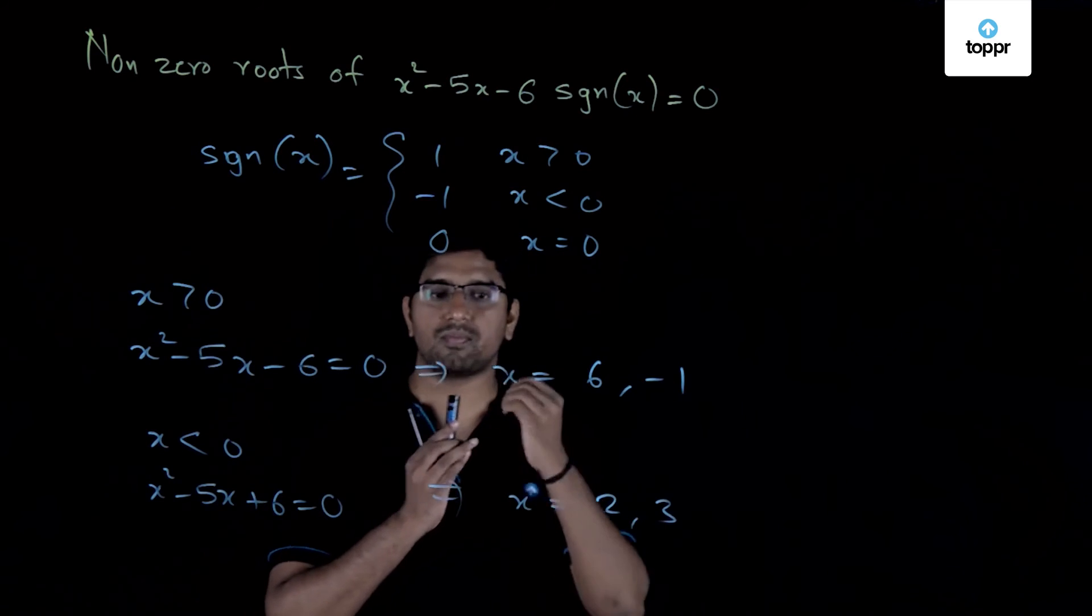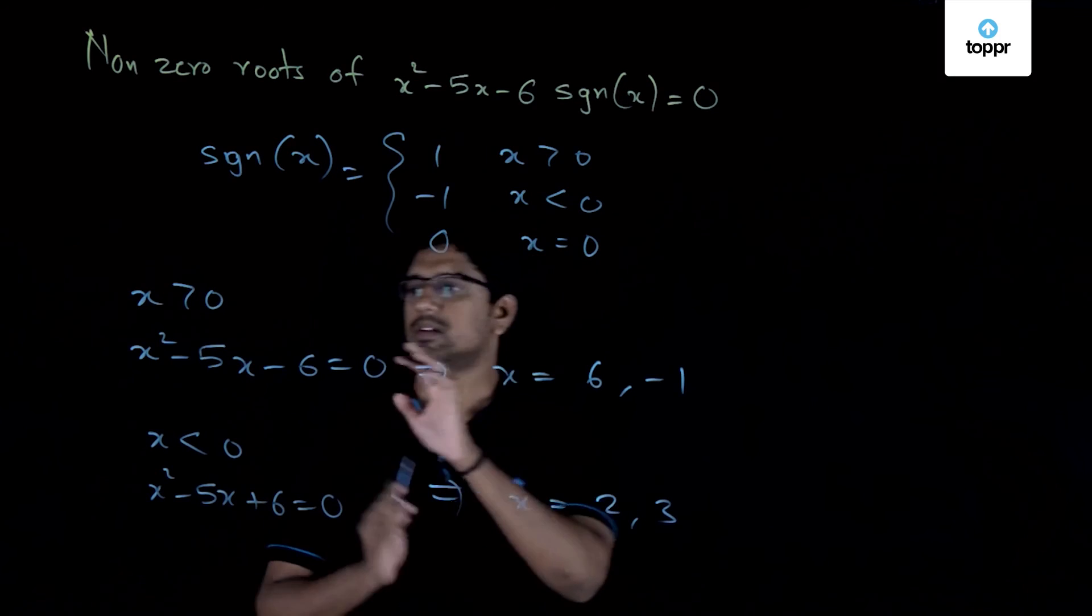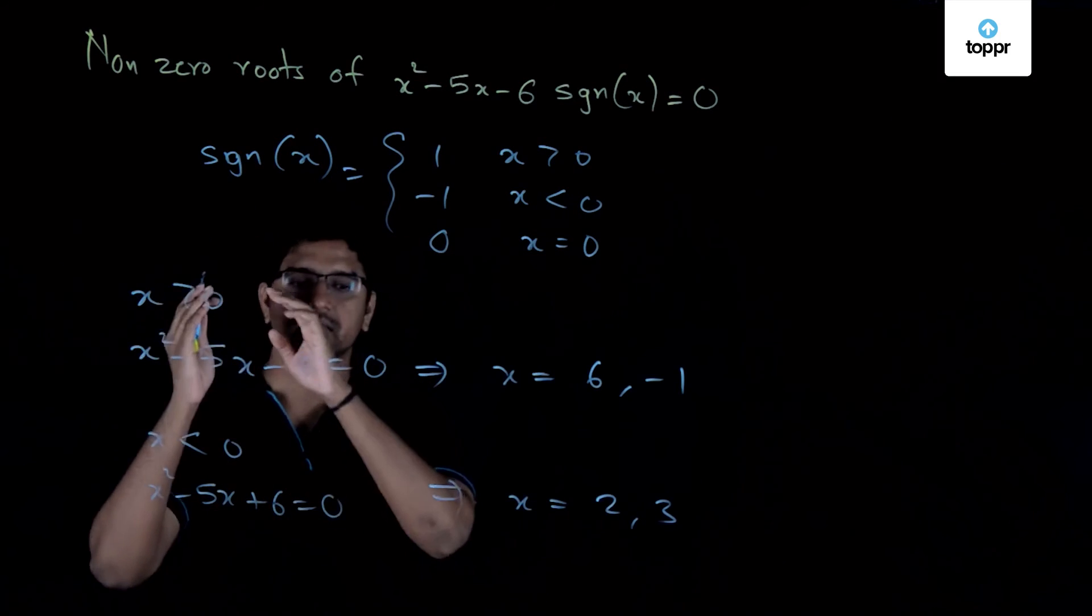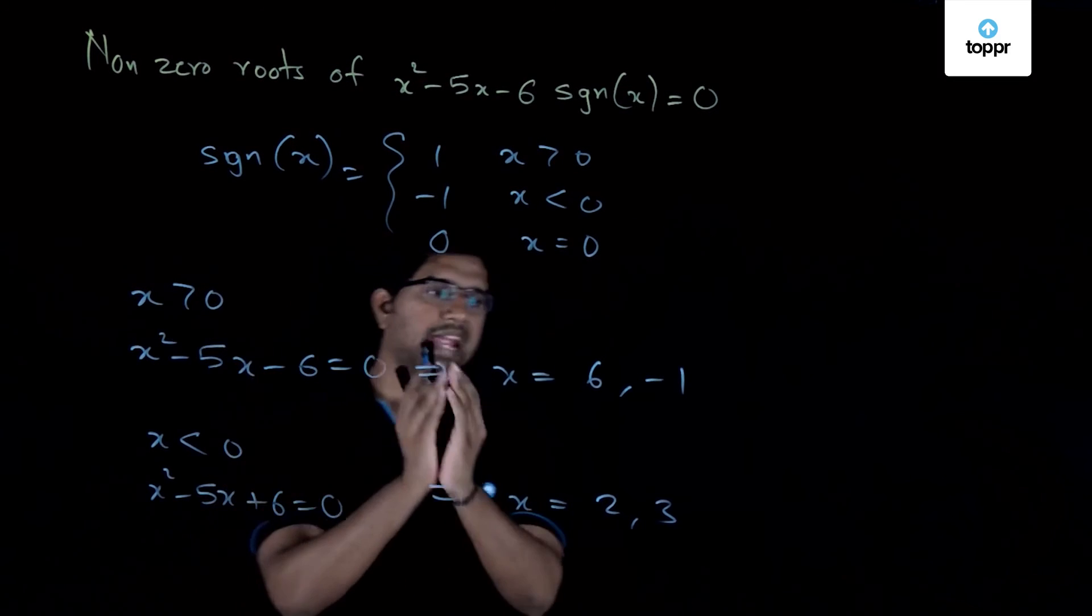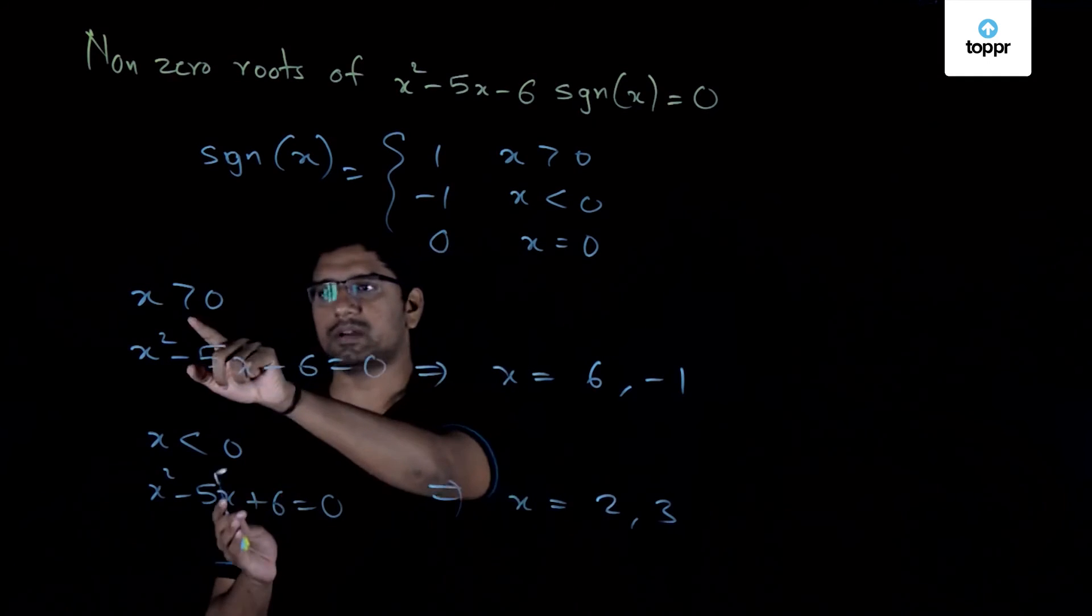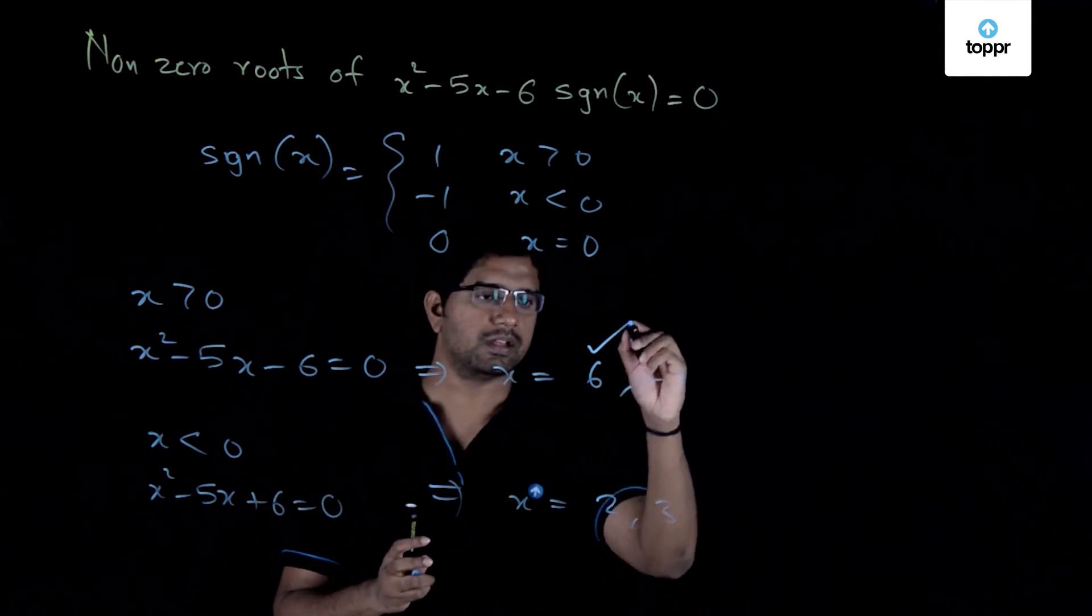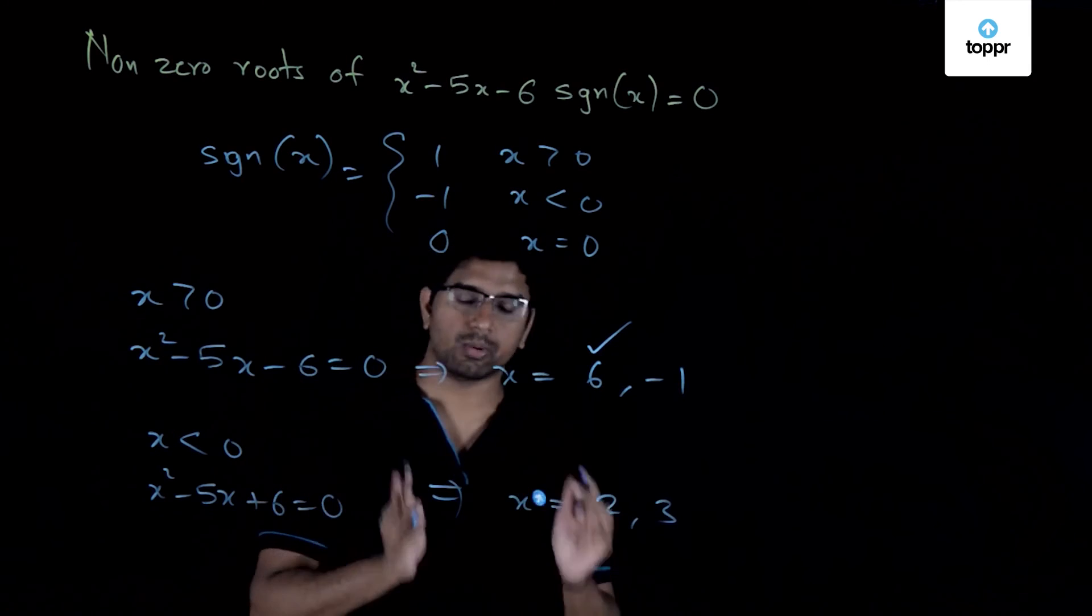Now, here is where you have to make that decision properly. So for the first thing, we assume that x is positive and then we obtain this quadratic and we obtain the roots as 6 and minus 1. Now among these two roots, which of them are positive? Only one is positive. So this minus 1 is not a root of the given quadratic equation.